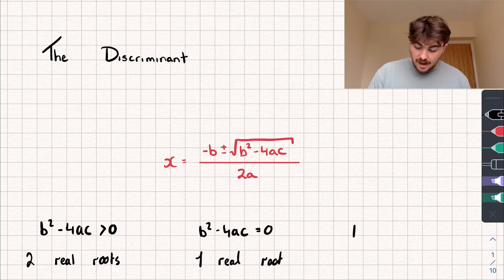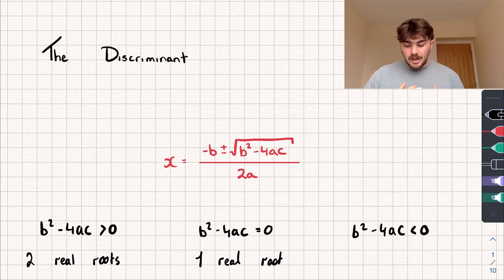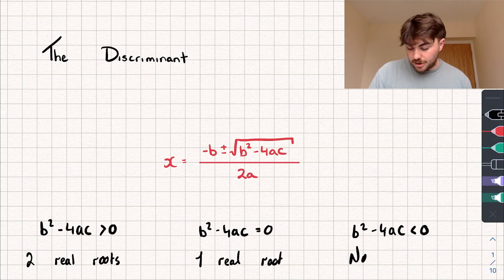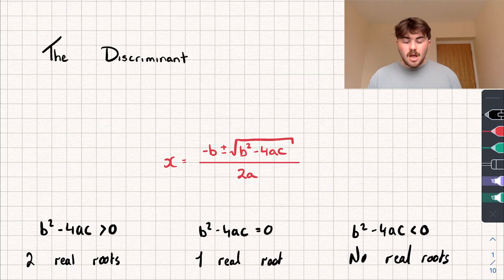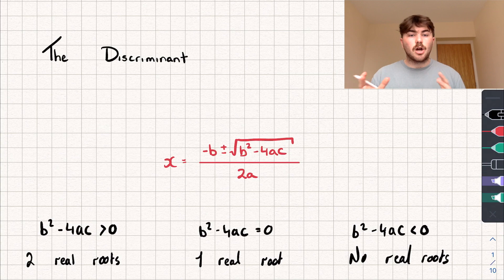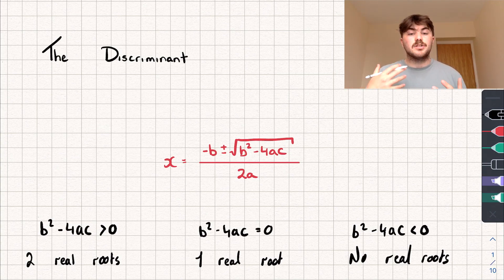Finally, we could have that b squared minus 4ac is a negative number, so it's strictly less than 0. If that's the case, we've got negative b plus or minus the square root of a negative number, and at least at this stage we can't calculate the square root of a negative number, so we can say it has no real solutions, or no real roots. In terms of an exam question at A-level, you'd probably be given a quadratic with one of the coefficients missing and asked to calculate it, and you could use the fact that the discriminant is greater than 0 to find that missing value.